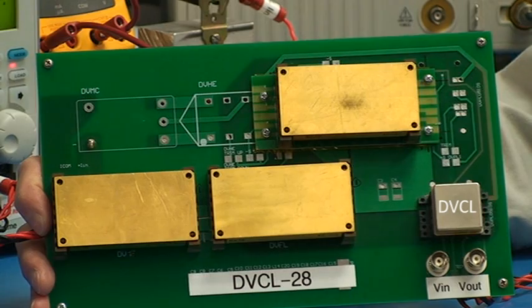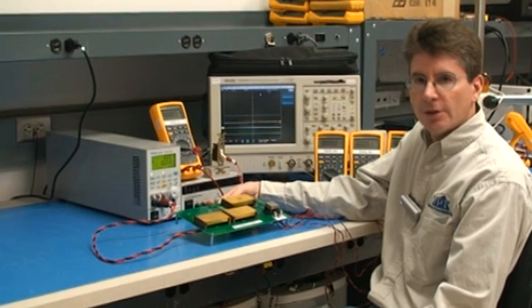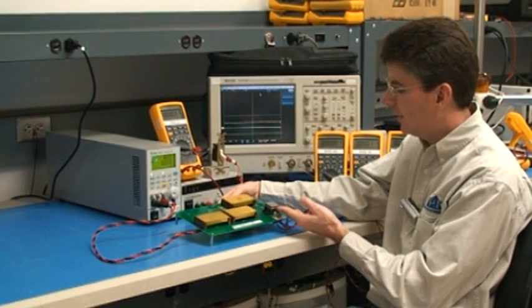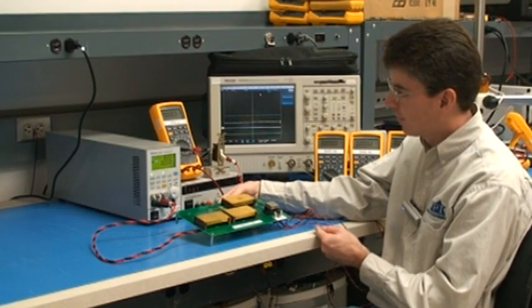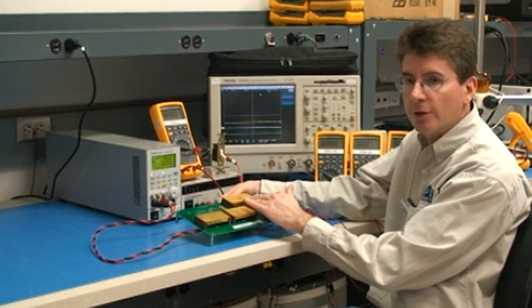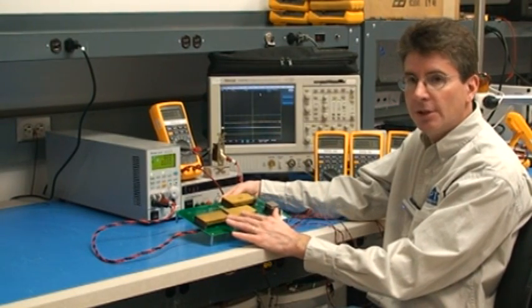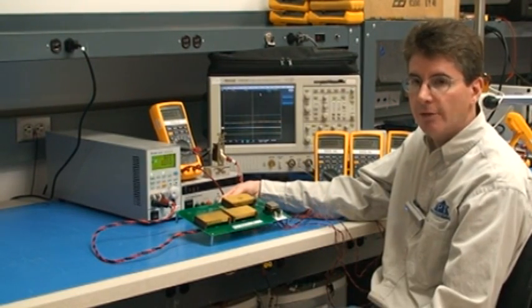Next, we will demonstrate how the DVCL functions. This is the test setup we'll demonstrate today. We have the DVCL Inrush Current Limiter. It's powering one EMI filter, the DVME28, which in turn is powering two DC-DC converters, both DVFL.